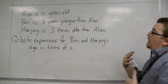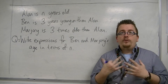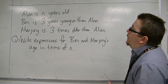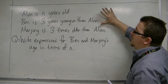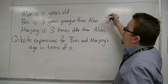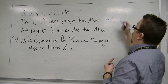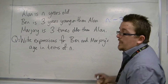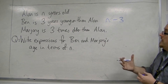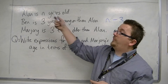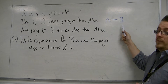So really what we're doing here is forming expressions using algebra. If Alan is n years old and Ben is 3 years younger than Alan, then Ben is n years old take away 3 years. So n take away 3. If Alan was 10, for example, then Ben would be 7 — 10 take away 3 is 7.